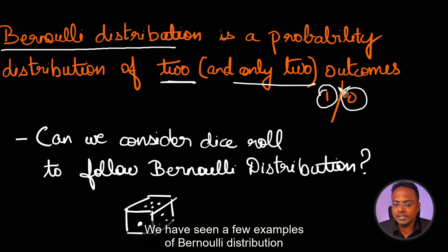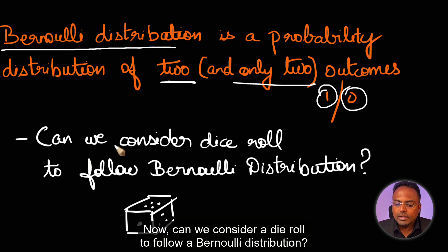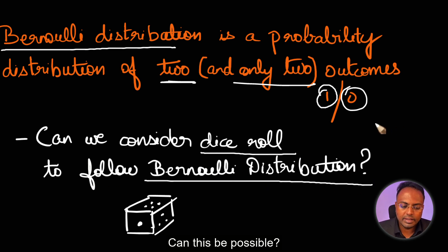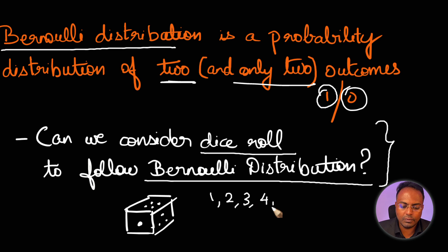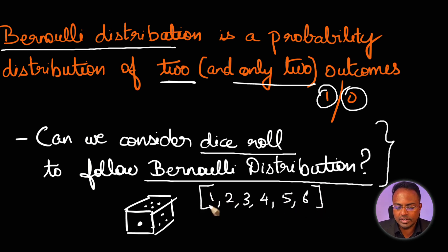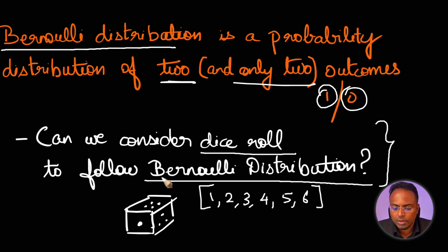Now, we have seen a few examples of Bernoulli distribution. Can we consider a die roll to follow a Bernoulli distribution? If you think about it, a die roll can take six possible values: 1, 2, 3, 4, 5, and 6. Six possible values exist, so typically this is not going to be a suitable example for Bernoulli distribution.